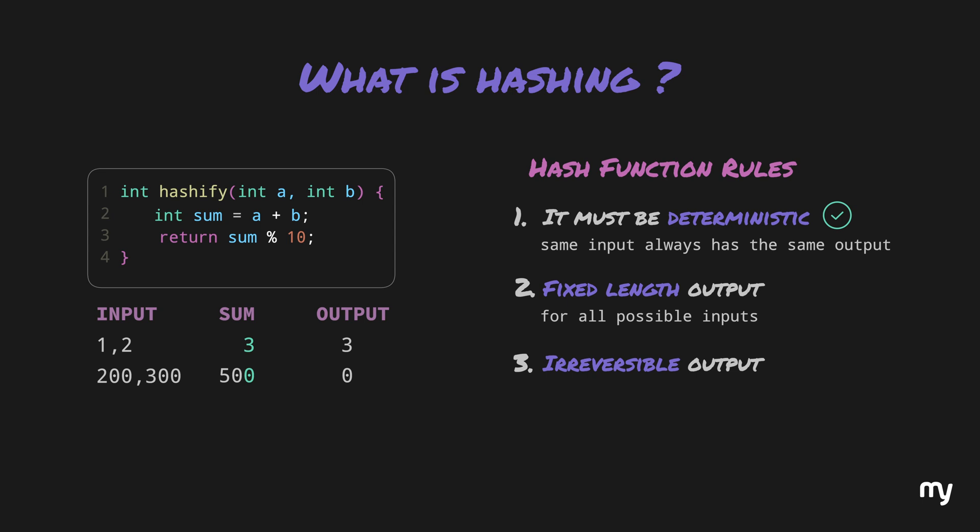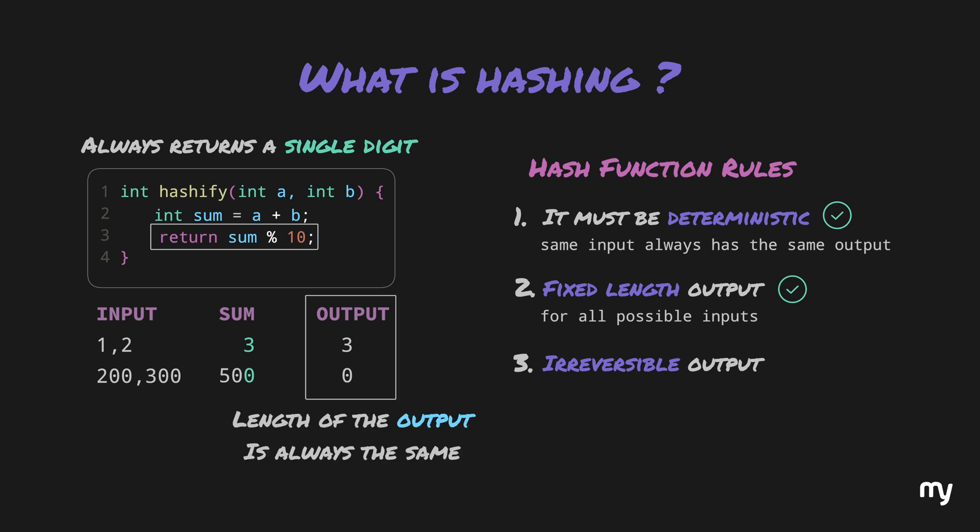And rule number 2 is also satisfied because this function will always return a single digit, no matter how large the sum is. Therefore, for all possible inputs, it will only return 1 digit, meaning the length of the output is always fixed, that is, 1.